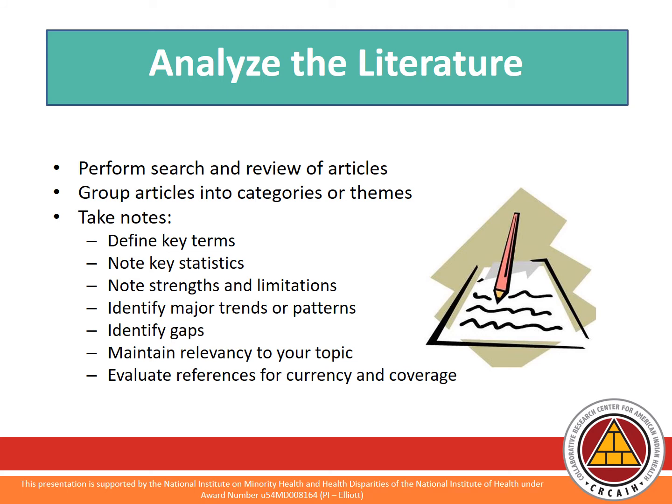Once you have decided what types of literature you wish to review, the third step is to analyze the literature. This is when you perform your search and review of articles. It is important to maintain an organized method to your analysis. Group articles into categories or themes that emerge as you perform your search. Take good notes, as literature reviews can take time. Define key terms, note key statistics, and record strengths and limitations of published studies. All of these help you identify major trends or patterns and identify gaps. Your notes and record of your search also help you maintain relevancy to your topic and evaluate references for currency and coverage.